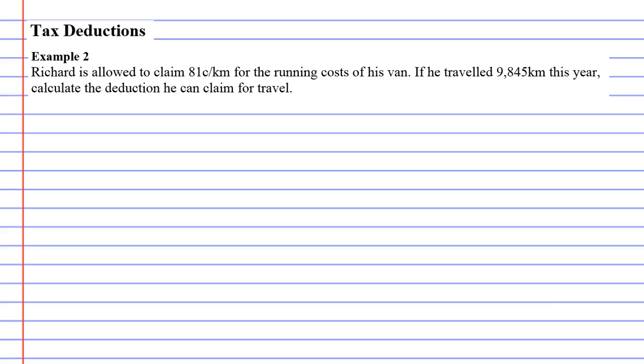This is a common question that relates to tax deductions. This is how we calculate deductions associated with travel. It's 81 cents per kilometer, and it's very important you write this in dollars.